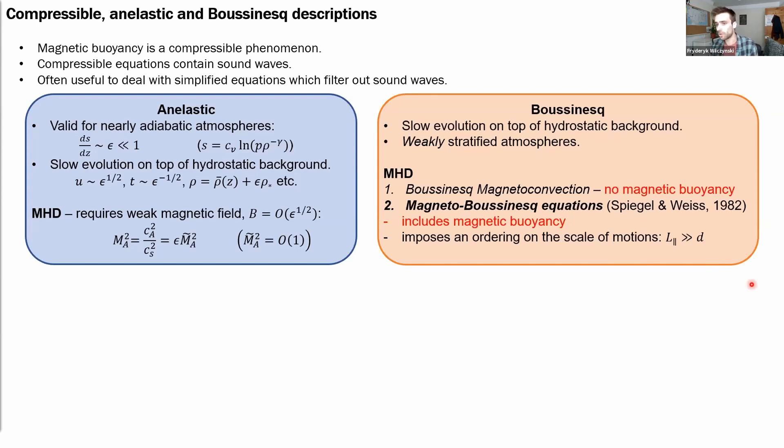So given that all these subtleties are required to include magnetic buoyancy in the Boussinesq approximation and the fact that seemingly none of those special measures need to be taken